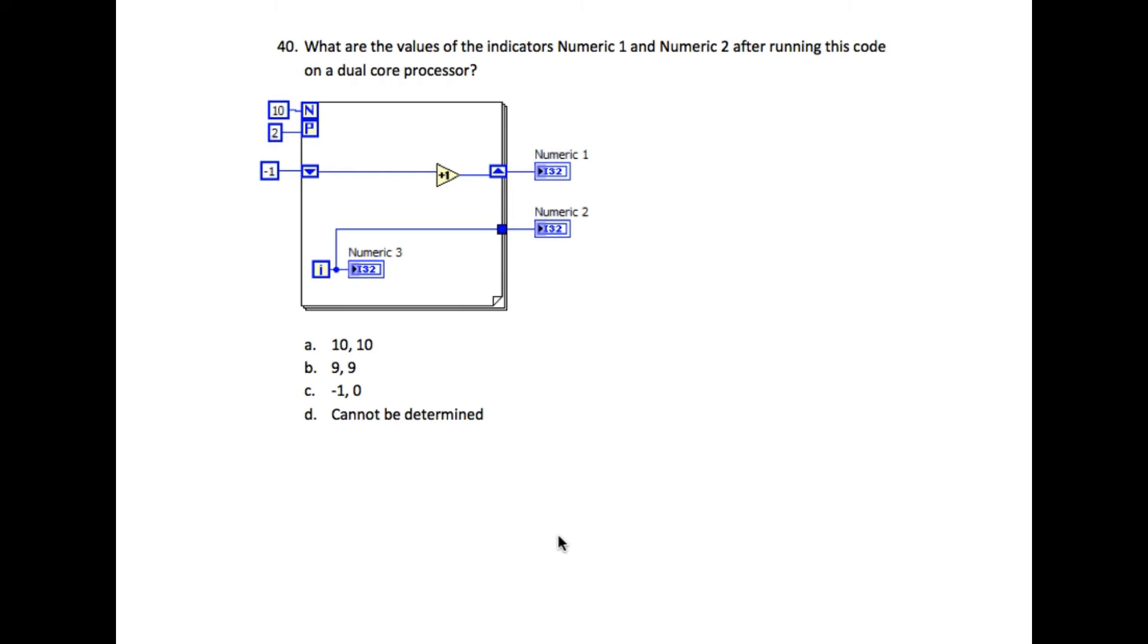So here, if the previous iteration's output affects the current output, then that is not going to be parallelizable in nature. But in this case, if you look very carefully, there is no dependency with the previous iteration.